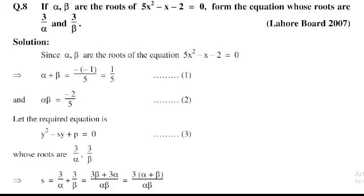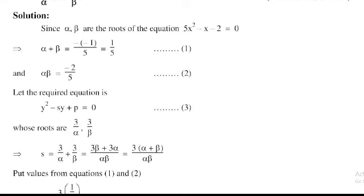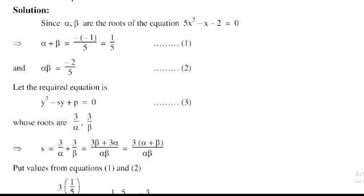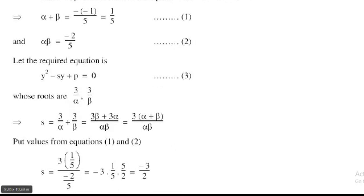S equals the sum of the new roots: 3/alpha + 3/beta. Taking the LCM, which is alpha·beta, this becomes (3·beta + 3·alpha) / (alpha·beta) = 3(alpha + beta) / (alpha·beta). Substituting the values, S = 3 × (1/5) divided by (−2/5).